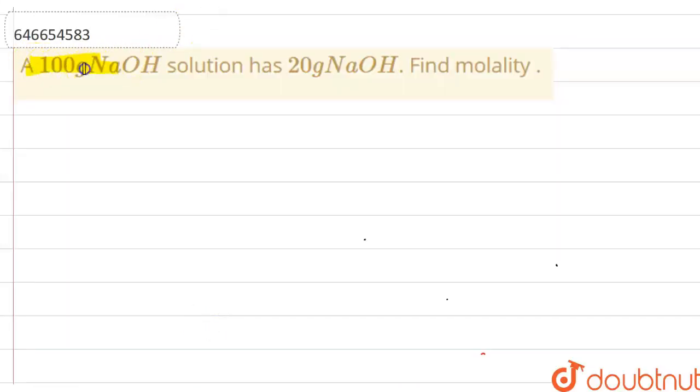A 100 gram NaOH solution has 20 gram NaOH. Find molality. As you know that molality is equal to number of moles of solute upon mass of solvent in gram into 1000.